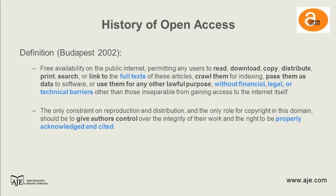The only constraint on reproduction and distribution, and the only role for copyright in this domain, should be to give authors control over the integrity of their work and the right to be properly acknowledged and cited. Even as the rights of a reader or user or consumer of content were expanded, the rights of the authors are still there. By expanding the reach of your work you can positively impact more people, but you should always be acknowledged and cited as the original author — no matter where you're publishing your papers or what format you're using.